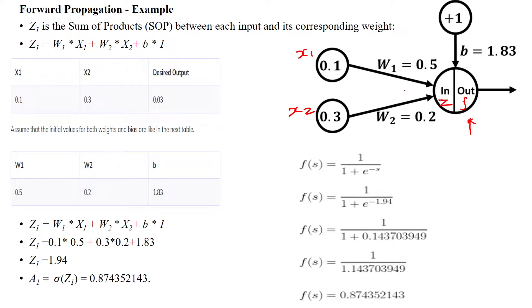For each connection, we will assign the weights. W1 is 0.5 and W2 is 0.2. Then the bias input is plus one, and the bias value is 1.83.